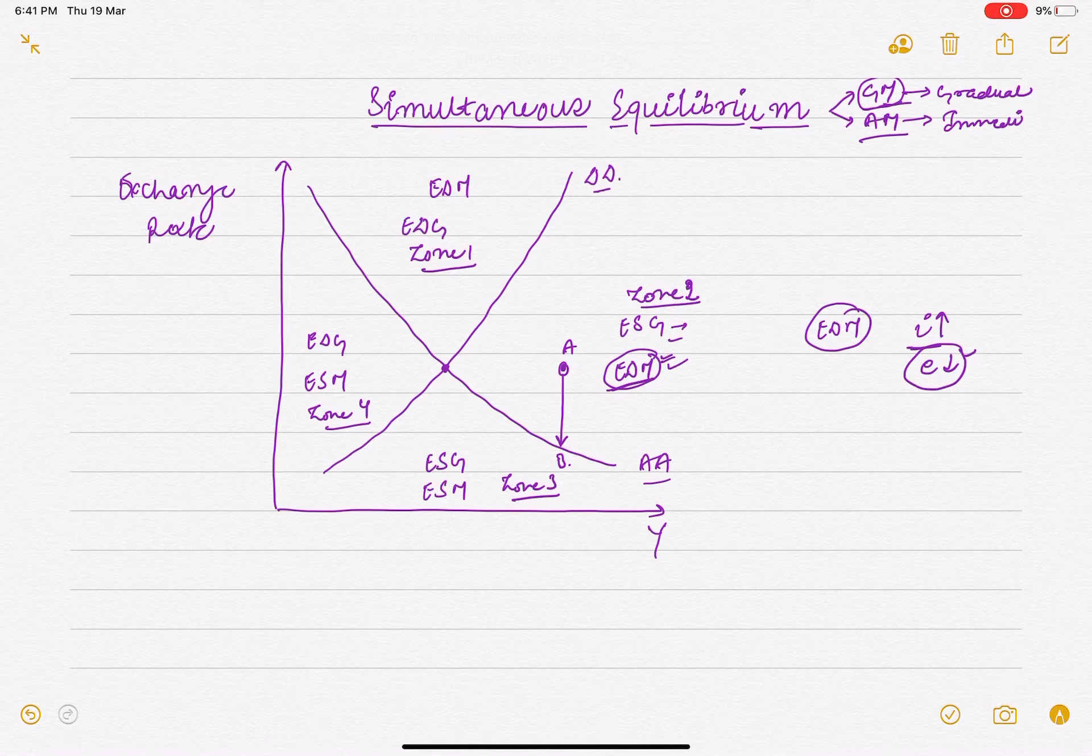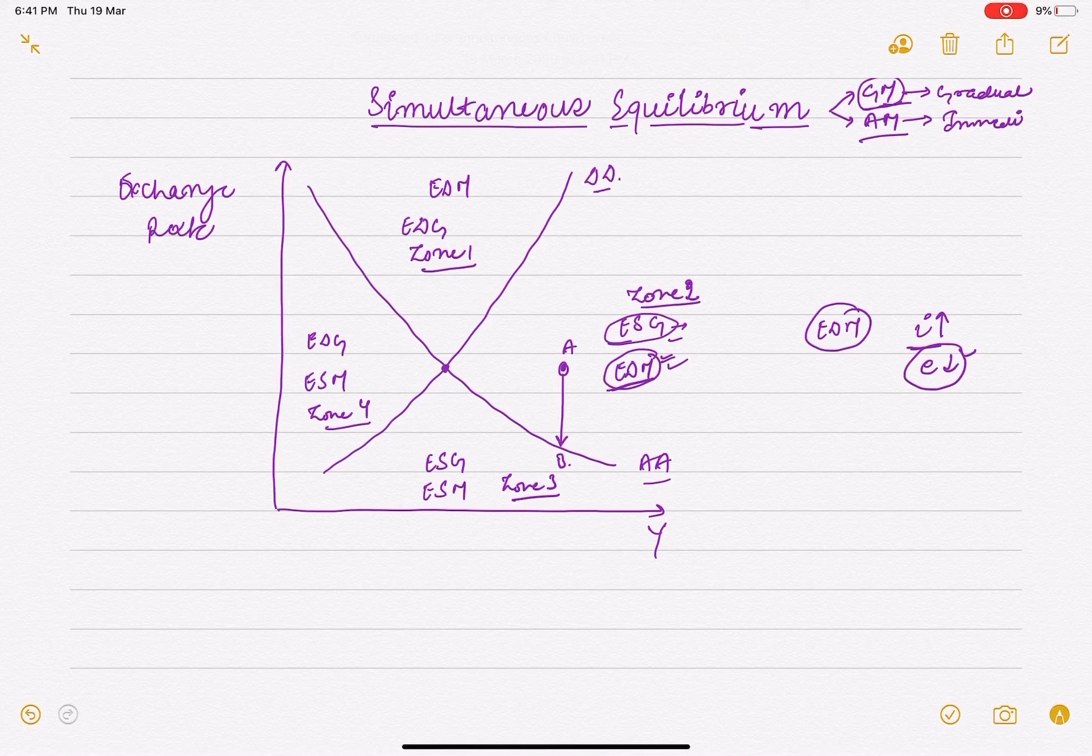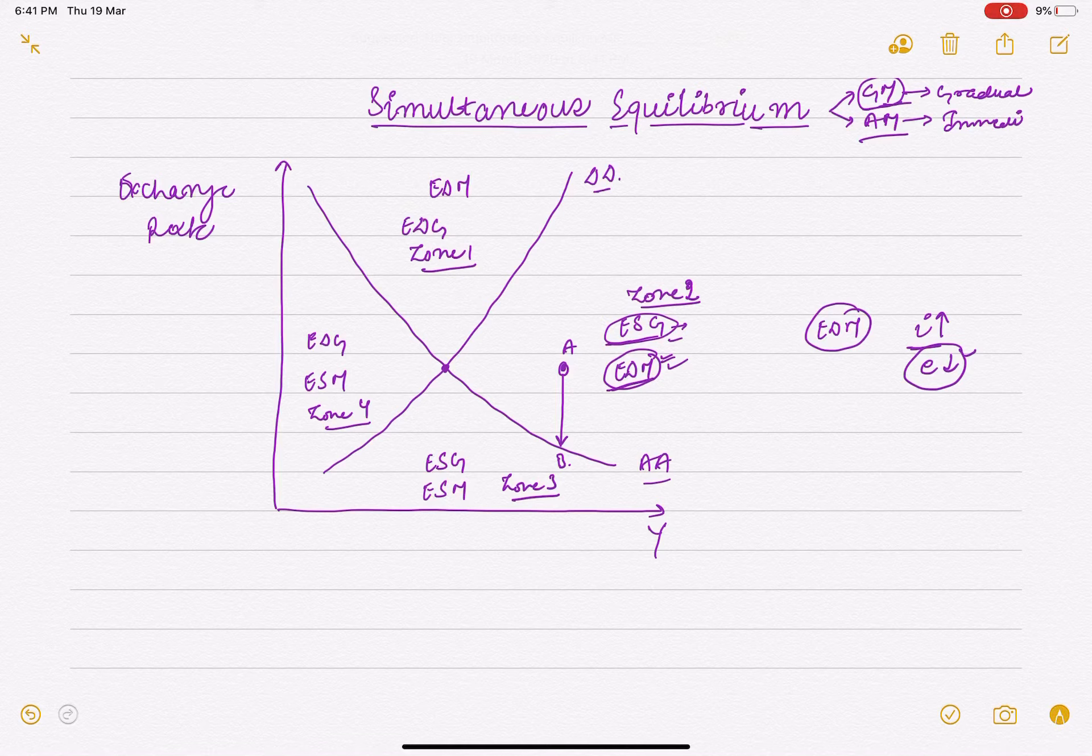Money market and asset market have now adjusted, but in the goods market there is still excess supply of goods.